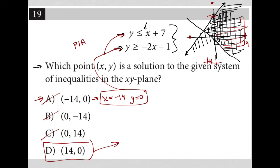Choice D, just to show it to you, we have here that x is 14 and y equals 0, so that means for our first inequality, y less than or equal to x plus 7, that would turn into 0 is less than or equal to 14 plus 7, which is true. And for our second inequality, y is greater than or equal to negative 2x minus 1. When I plug the numbers in from choice D, I would get 0 is greater than or equal to negative 2 times 14 minus 1, which is negative 28 minus 1 is negative 29, which is also true.